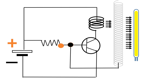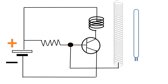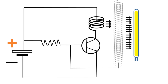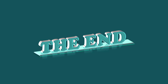Once a negative voltage flows from the secondary coil to the base of the transistor, it cuts the current flowing from base to emitter. It in turn cuts the current flowing through the collector and emitter. No electricity in the primary coil. No induction to the secondary coil. No negative current is flowing from the secondary coil to the base. This process goes on and on. The bulb glows continuously.